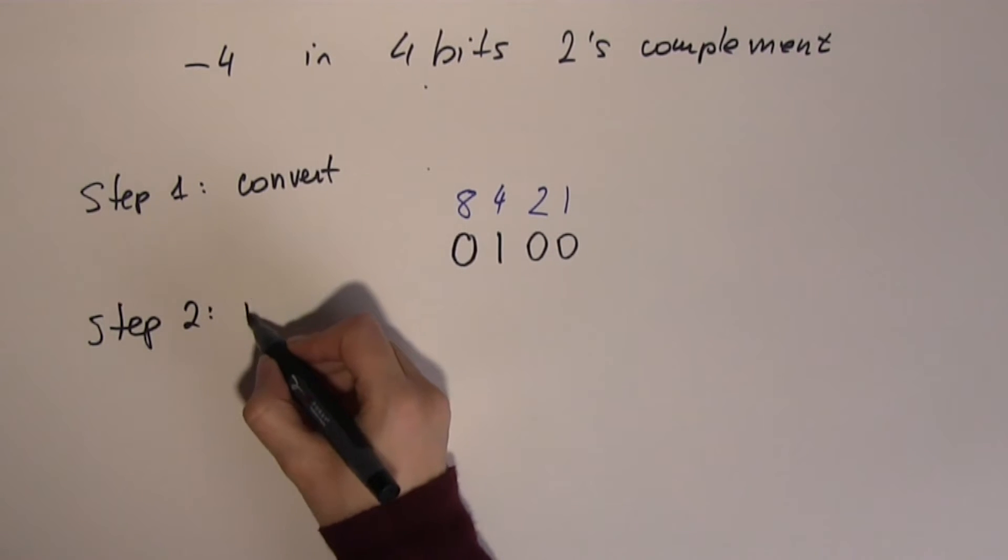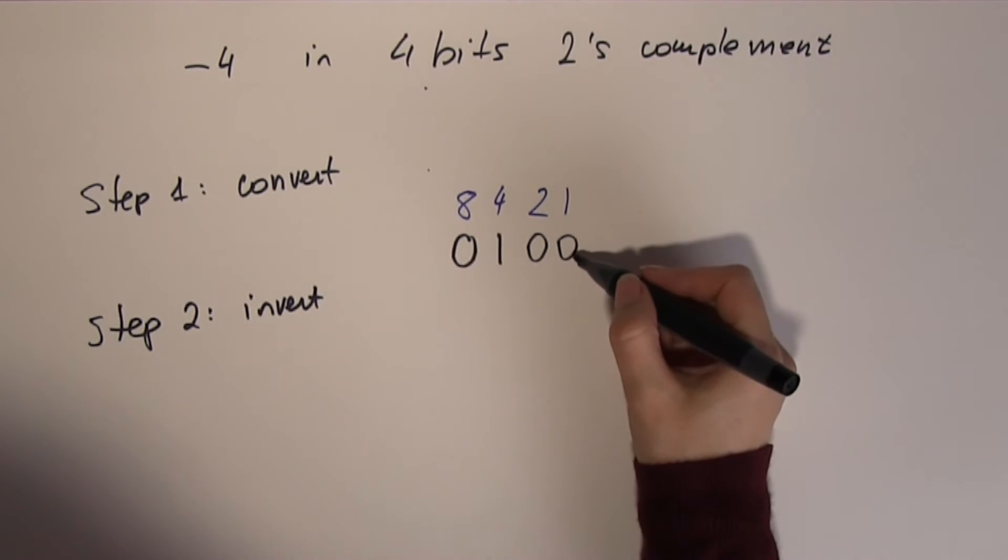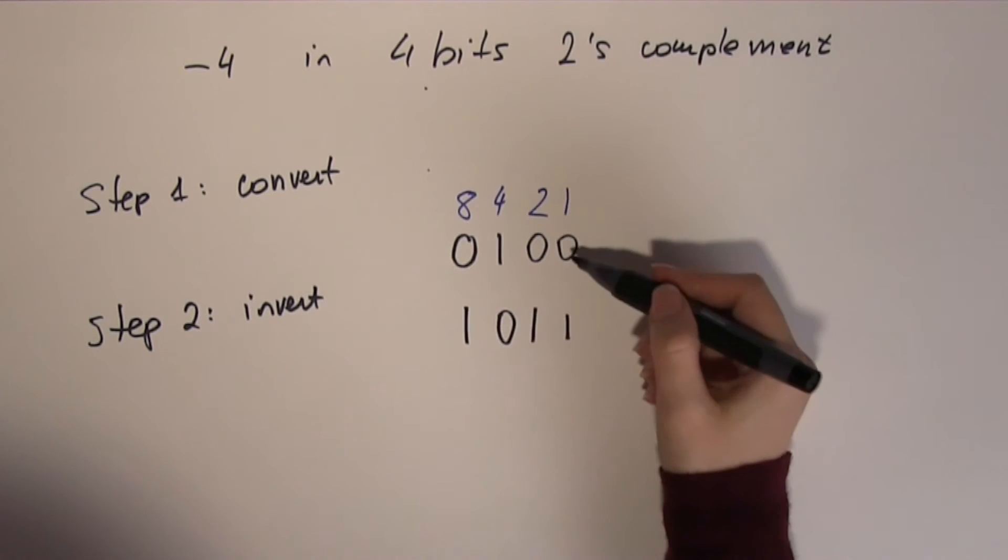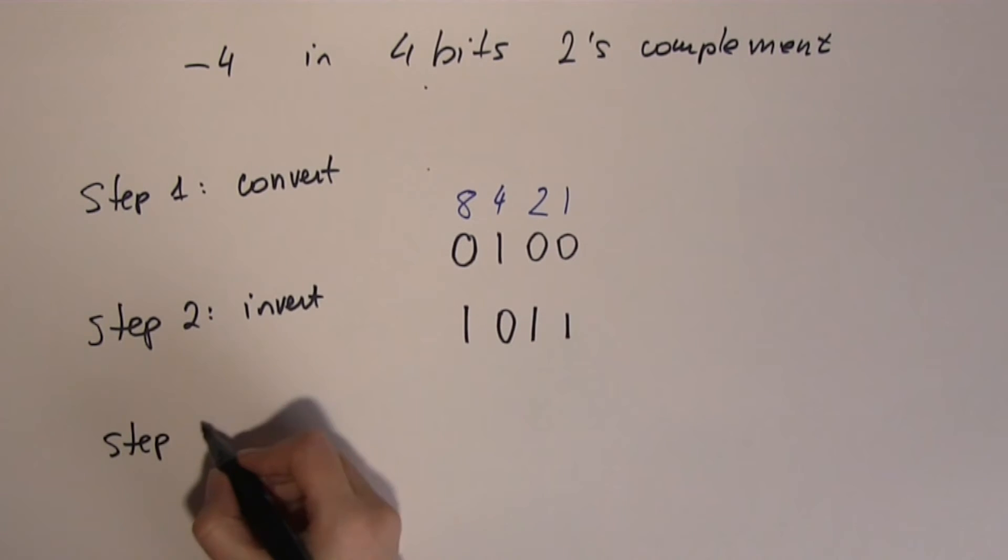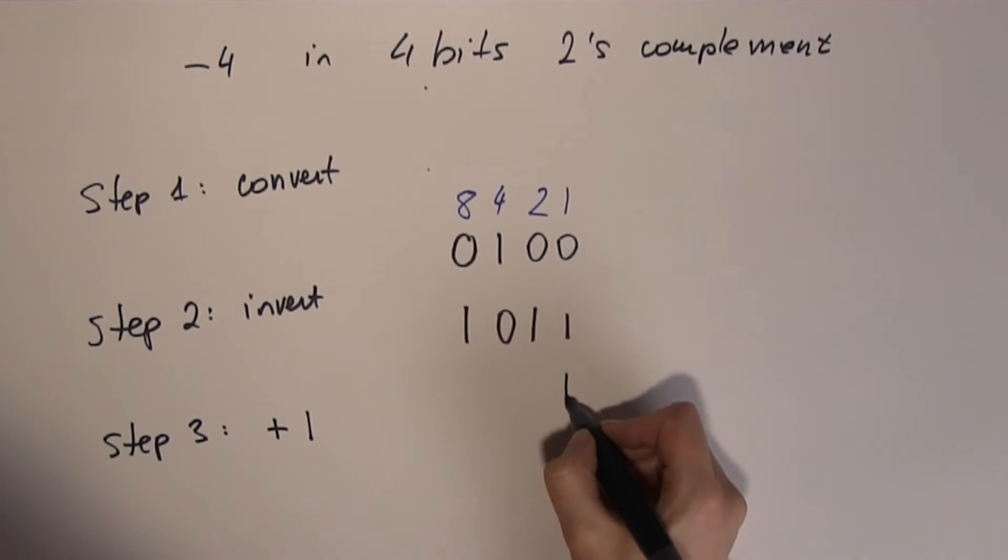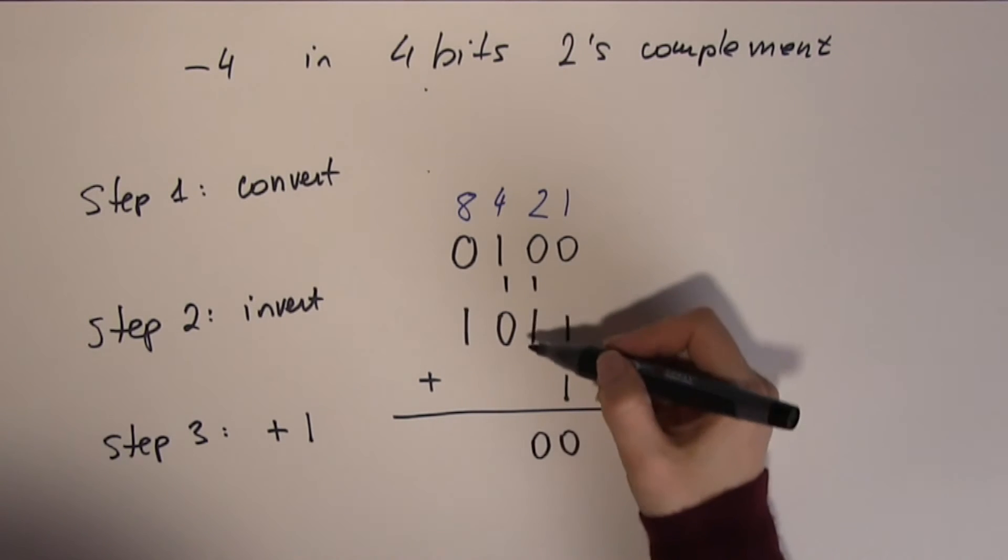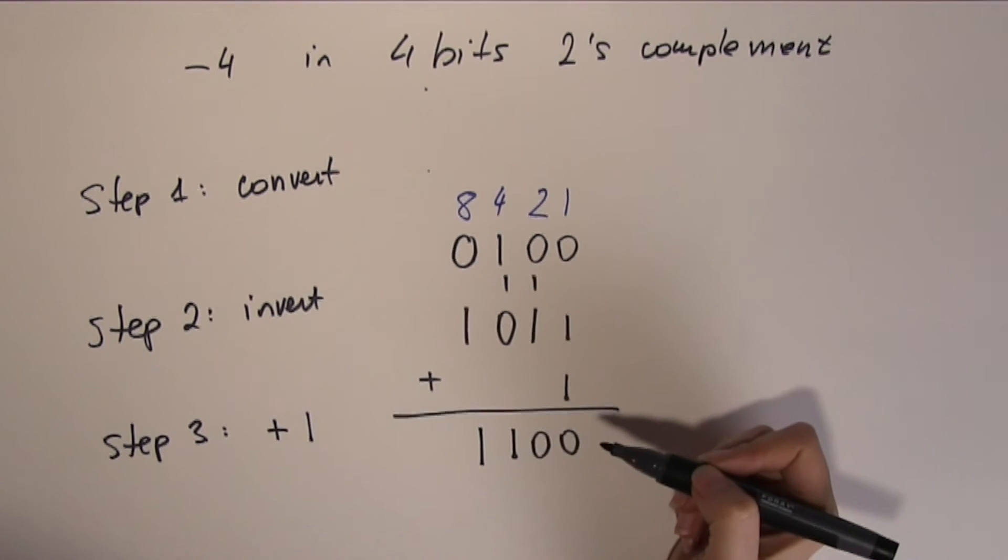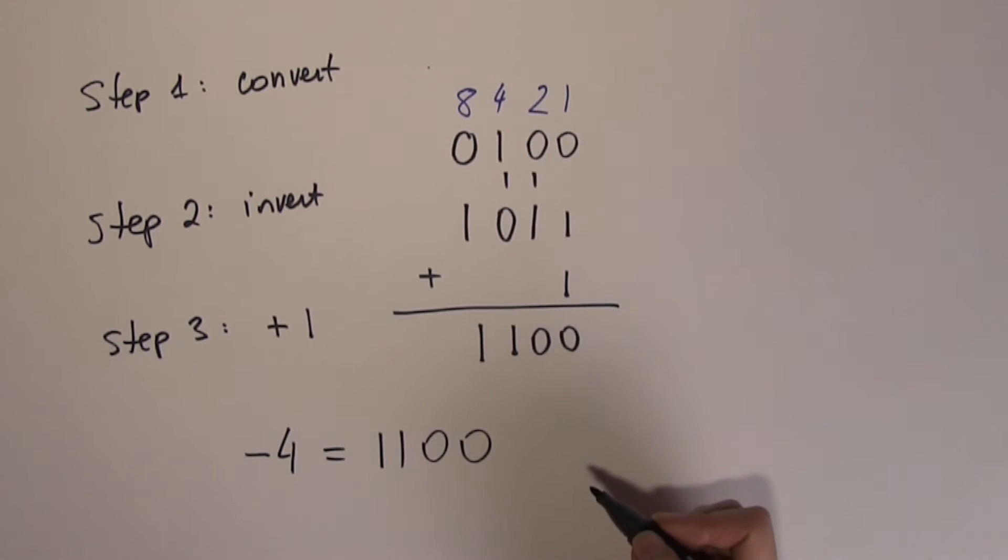Step 2 is the invert. Everywhere I have got a 0, I turn it into a 1, and everywhere when I have a 1, I turn it into a 0. 0 becomes 1, and 1 becomes 0. Then comes the extra step, adding 1. 1 plus 1 makes 0, carry the 1. 1 plus 1 makes 0, carry the 1. 1 plus 0 makes 1, and 1 plus nothing keeps 1. So minus 4 is the same as 1, 1, 0, 0 in 4-bit 2's complement.